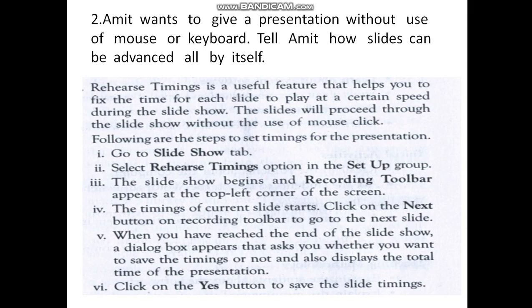The steps: First, go to the Slideshow tab. Next, select the Rehearse Timings option in the Set Up group. The slideshow begins and a recording toolbar appears at the top left corner of the screen, and the timing of the current slide starts. Click the next button in the recording toolbar to go to the next slide. When you have reached the end of the slideshow, a dialog box appears asking whether you want to save the timings or not, and it also displays the total time of the presentation. Click the Yes button to save the slide timings.